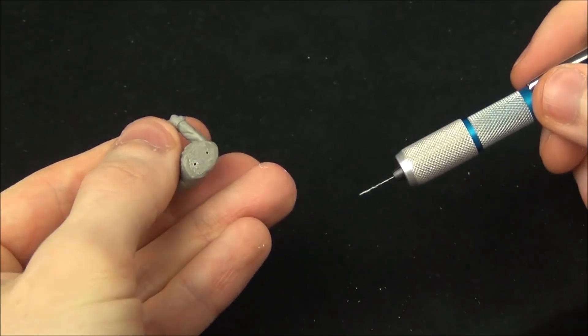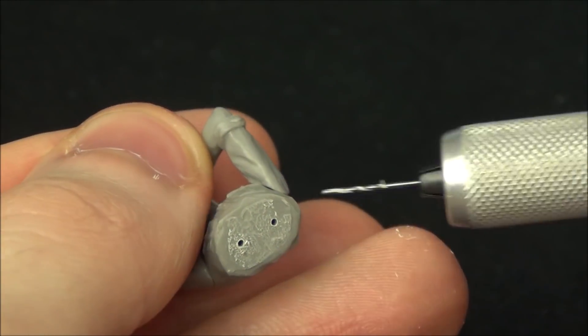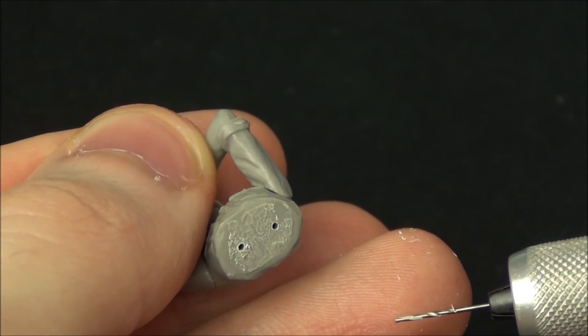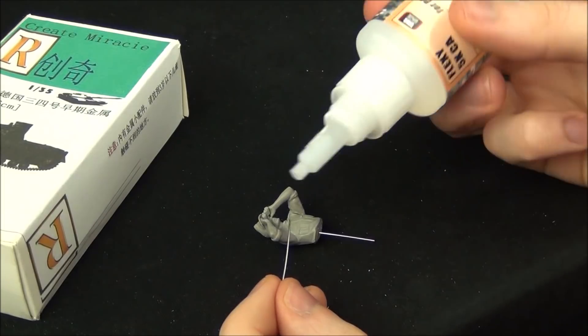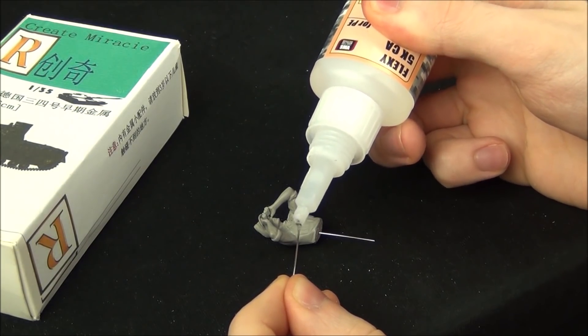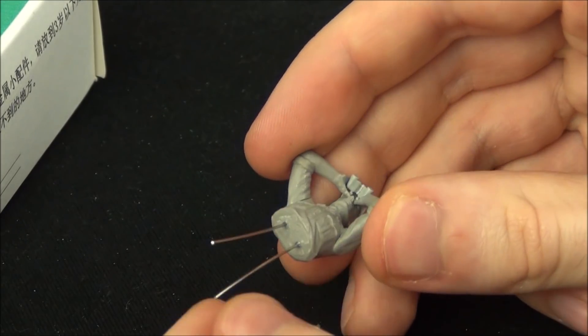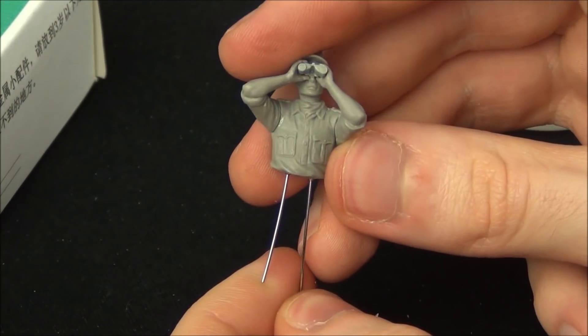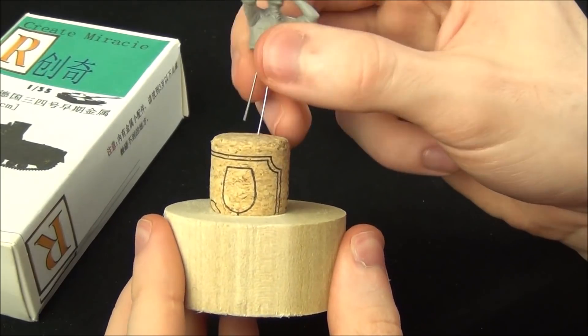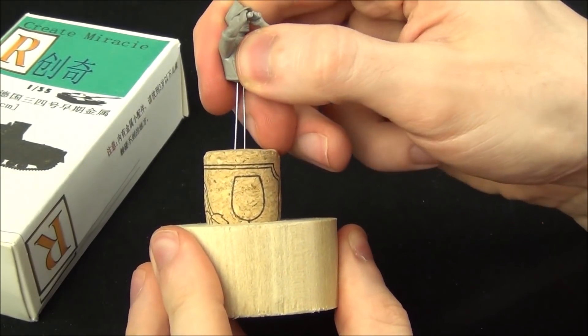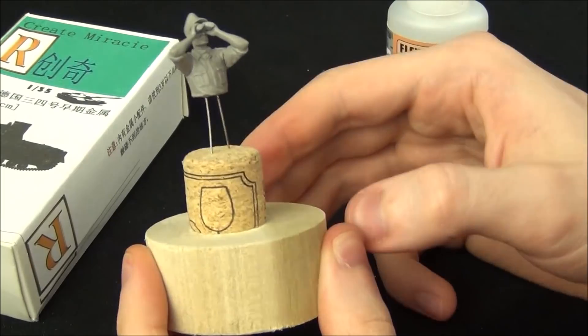So I drilled out a couple of little holes, two holes otherwise he will rotate when you try to paint him, and then I glued a little bit of track pin from metal tracks. I just super glued it into the holes and then I can use this to mount him into a little cork and this makes a much easier handhold. You don't want to hold the figure because you're going to wear the paint off it and it's much more awkward.